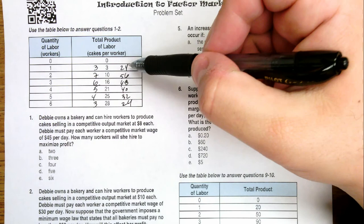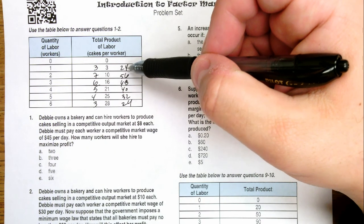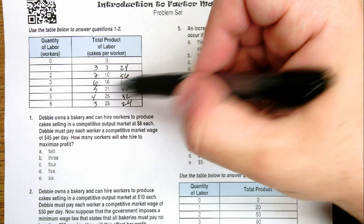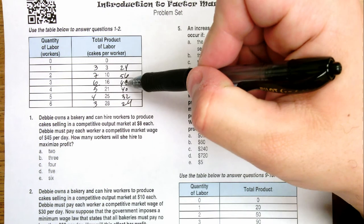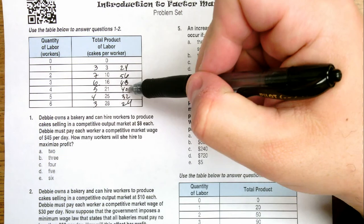So the last point at which the marginal revenue product is greater than or equal to the marginal cost, which is the wage, is at three workers. That third worker generates $48 worth of value for the company, but he only costs $45. The fourth worker generates $40, but he costs $45, so he creates a loss for the company.